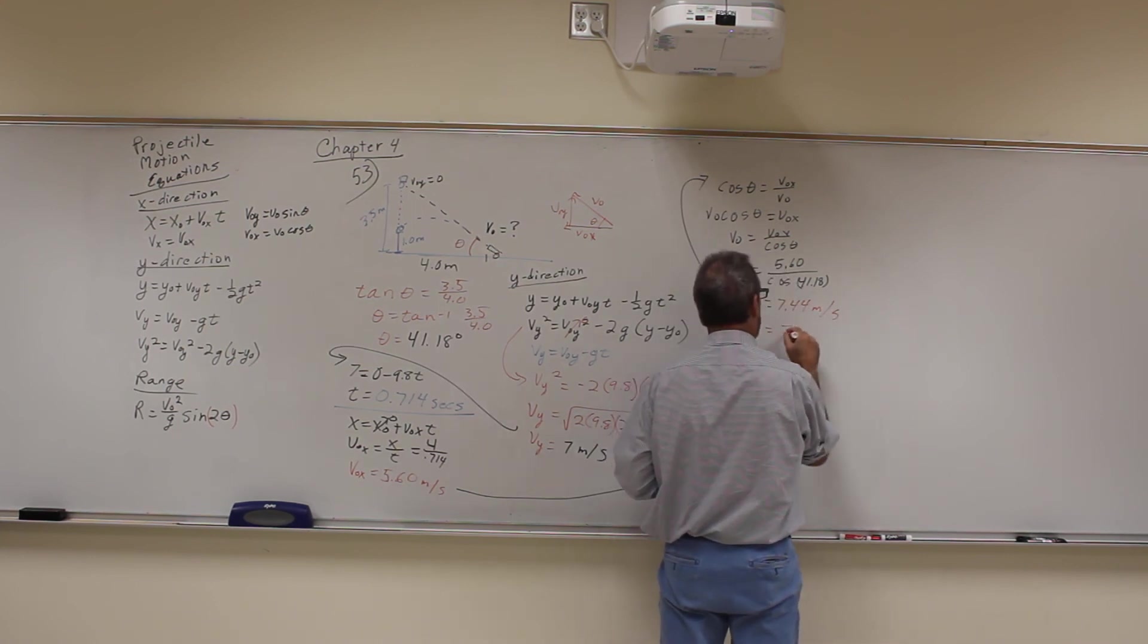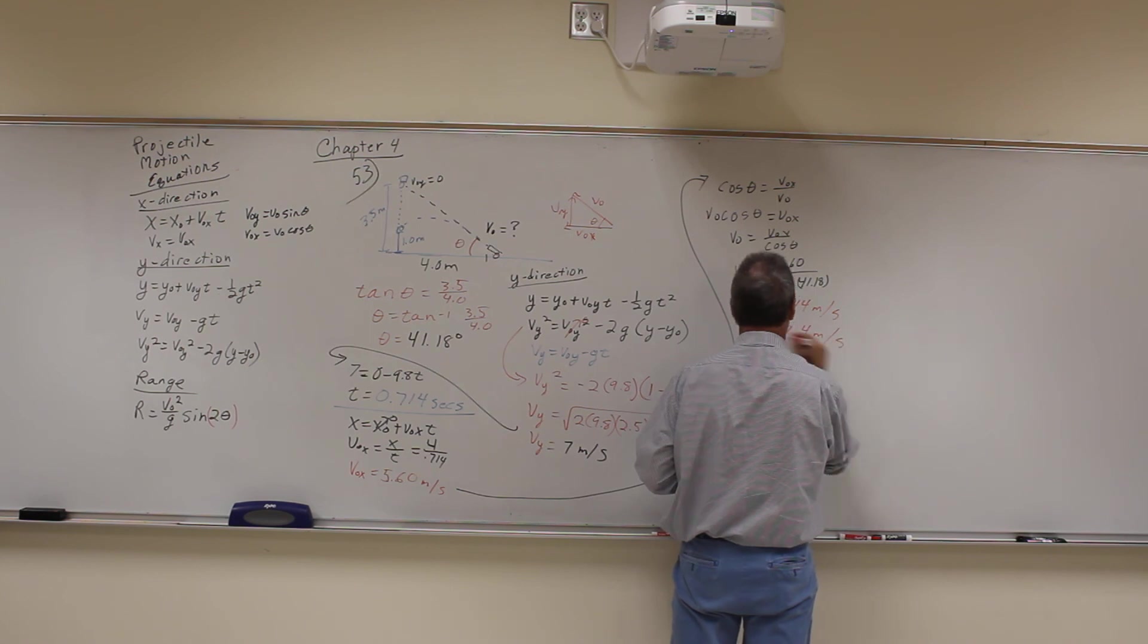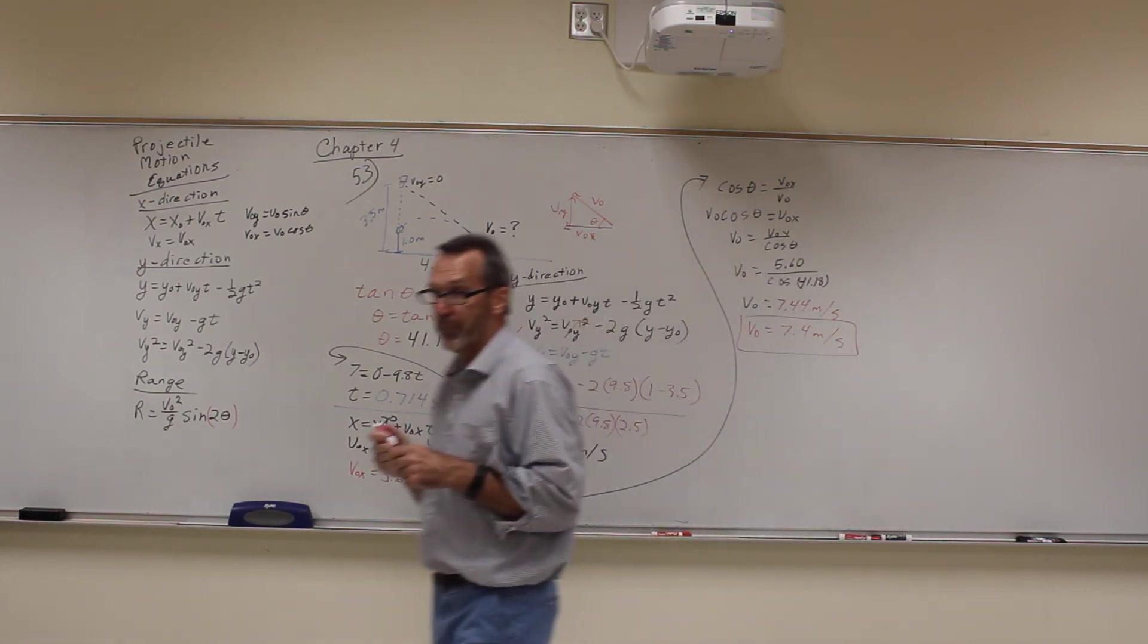And you get that the initial velocity is 7.44 meters per second. I think we actually have two sig figs, so it's 7.4 meters per second. And there you go.